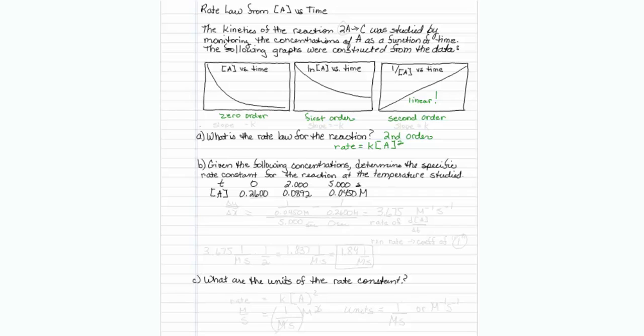For zero order reactions, if this were a line, the slope would be equal to minus K. For first order reactions, if this were a linear line, the slope would also be equal to minus K.